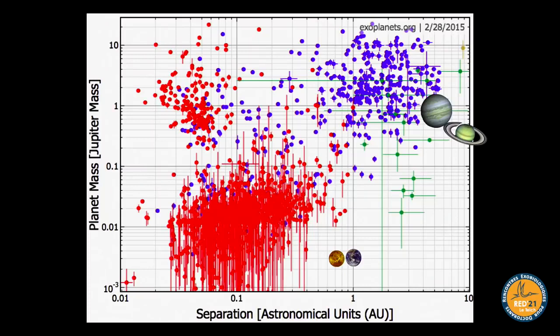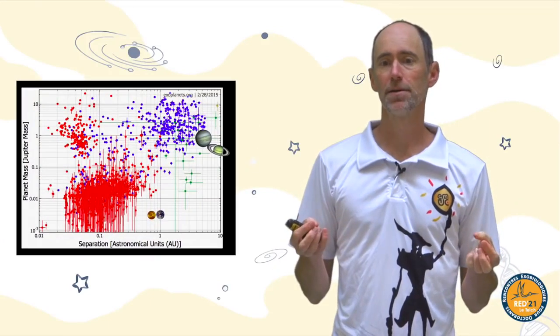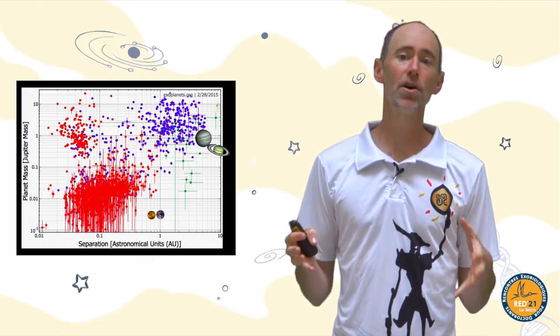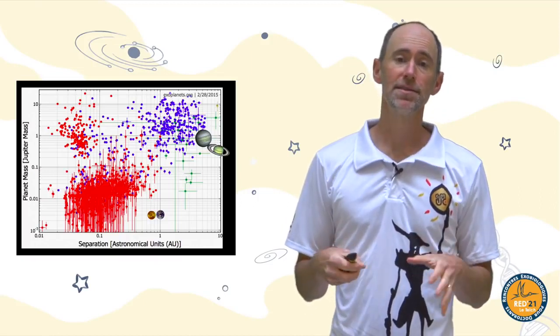As a recap, this is the population of exoplanets detected so far. These general populations still hold. The super-Earths are this population of mostly red points close to their stars, at sizes or masses a little bit bigger than Earth. About a third to a half of all main sequence stars are thought to have super-Earth planets around them, so they're a key population of objects we'd like to understand.